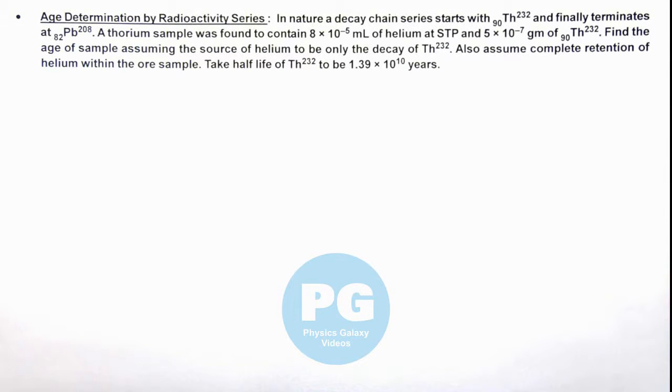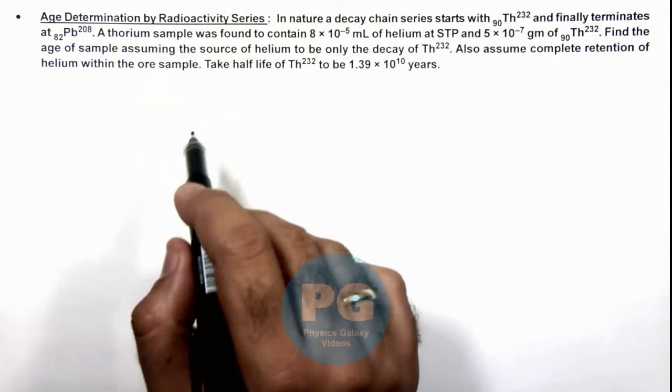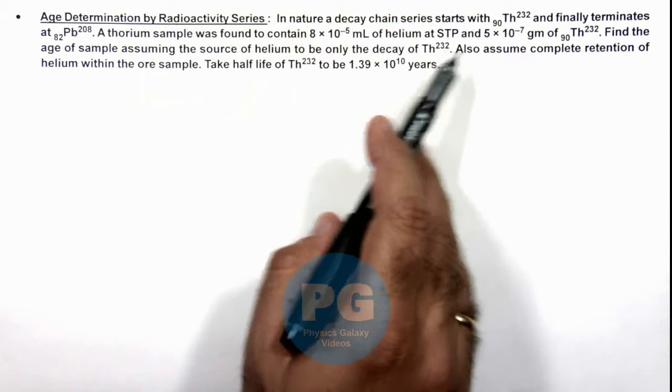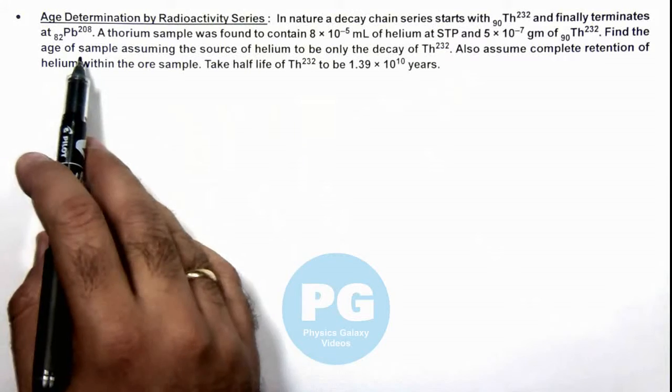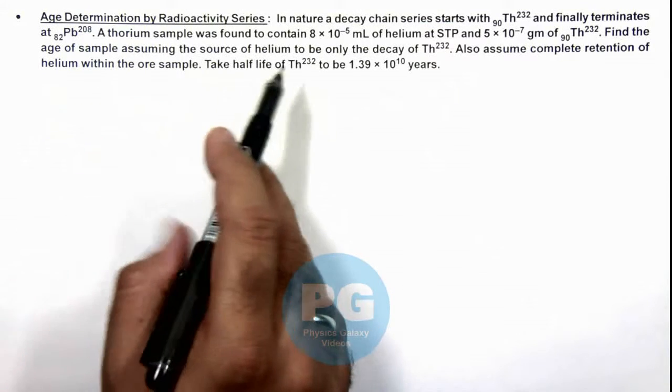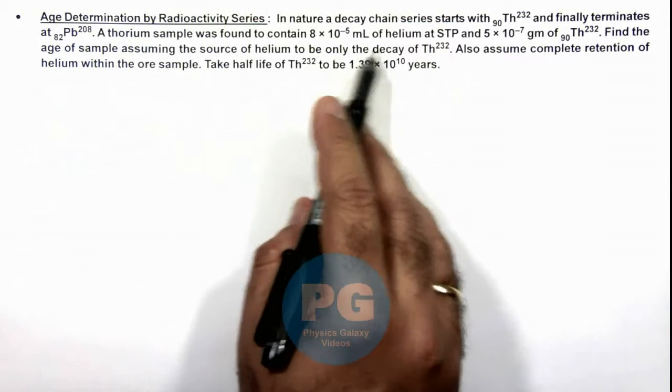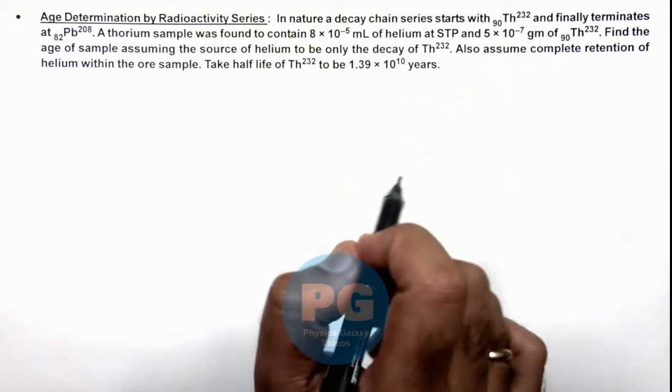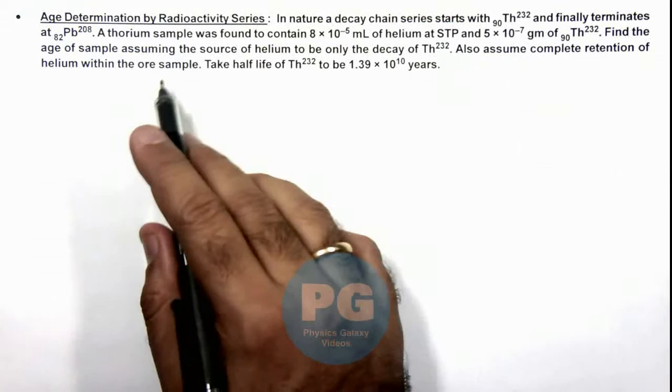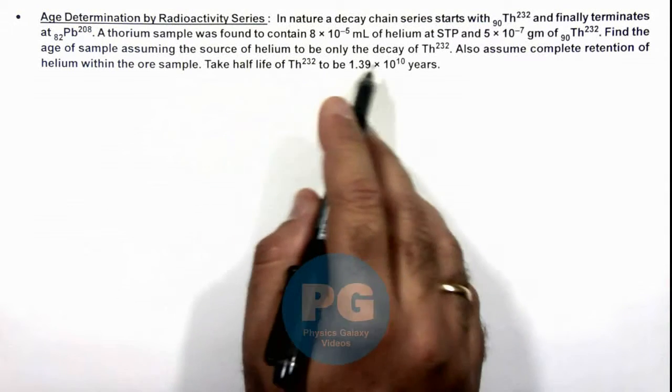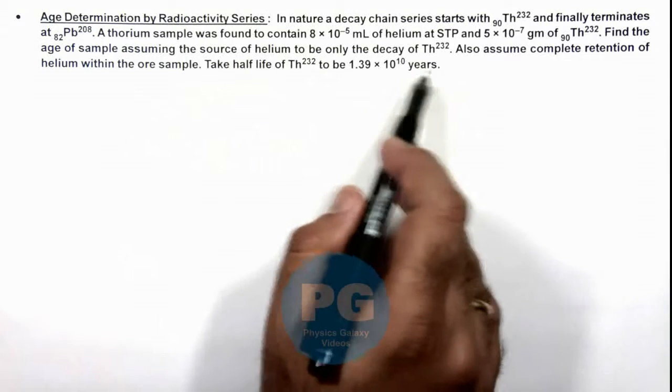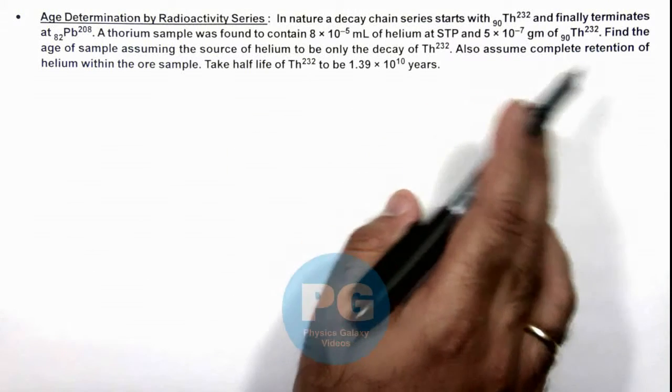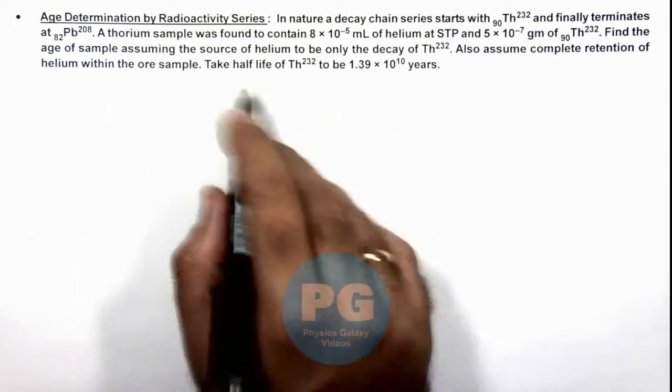In this illustration we'll study age determination by radioactive series. Here we are given that in nature a decay chain series starts with thorium and finally terminates at lead. A thorium sample was found to contain 8×10^-5 mL of helium at STP and 5×10^-7 gram of thorium. We are required to find the age of sample assuming the source of helium to be only the decay of thorium. Also assume complete retention of helium within the ore sample, and half life is given to us.